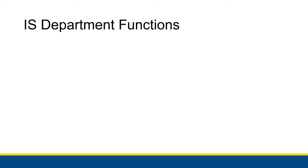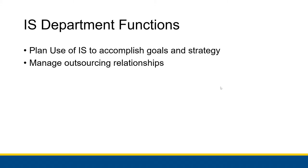There are five major functions of the information systems department. The first two we will talk about in this chapter are to plan the use of information systems to accomplish goals and strategy, and manage outsourcing relationships. We'll get through all of those throughout the topics in this chapter. Protecting information assets was chapter 10 material, so you should hopefully be pretty familiar with that.